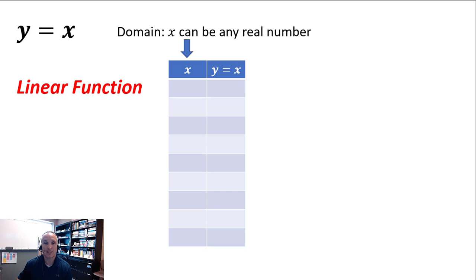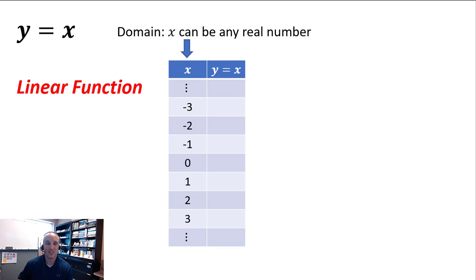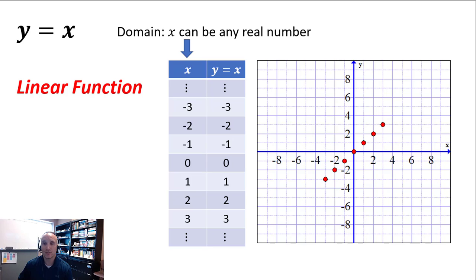So we generate our XY table. We have our X column — we know we can plug in any real number we want. The Y column will be Y values that are equal to the X values in the X column. Whenever I generate my X values, I like to consider negative X values, zero, and positive X values. Notice zero is in the middle, and as I go up I've got negative X values increasing in the negative direction, and positive X values on the bottom increasing in the positive direction, with dot dot dot to indicate that this goes on forever in both directions. The Y values in this XY table are exactly the same as the X values by the definition of the equation.